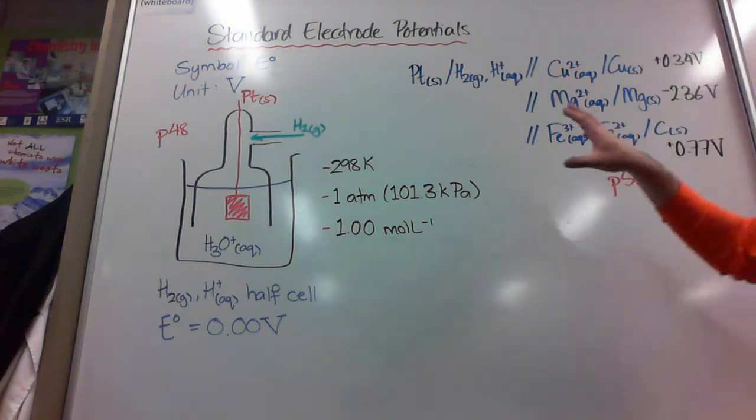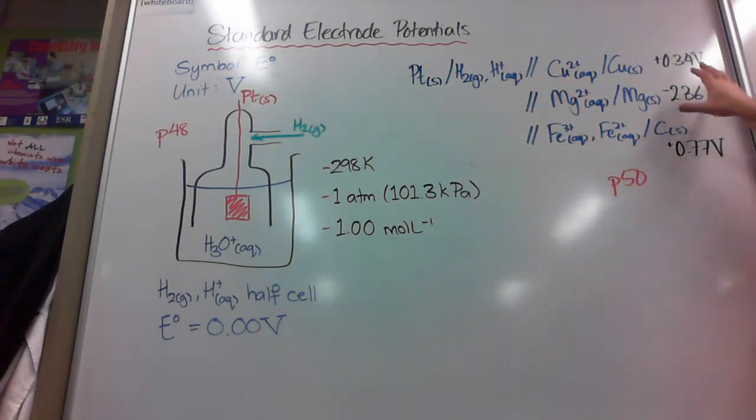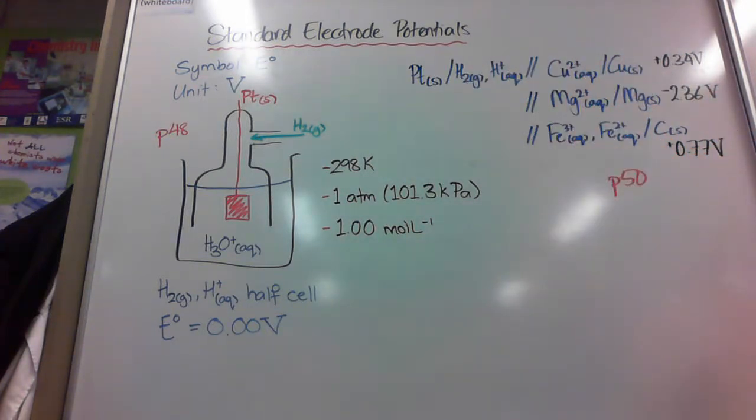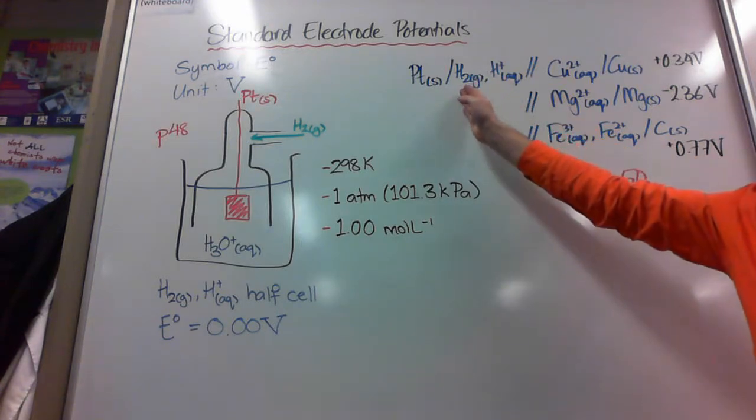So a standard electrode potential basically tells us how much voltage, I suppose it's easy to say, would be generated when it's in the half cell with, sorry, when it's in a cell with the hydrogen half cell.